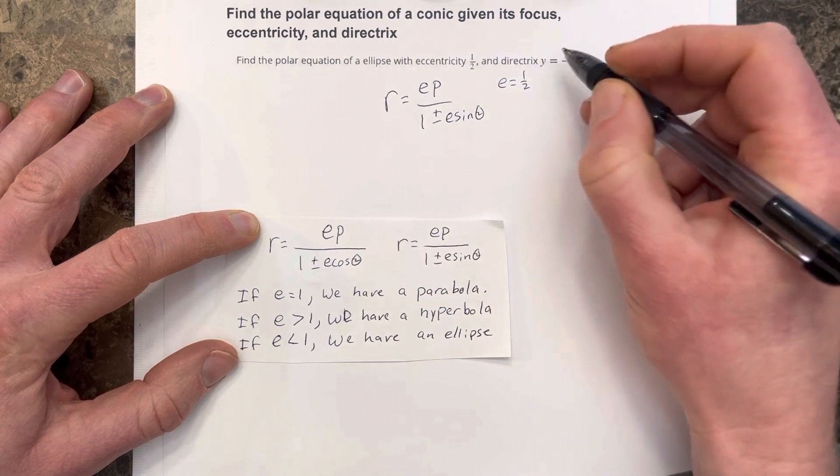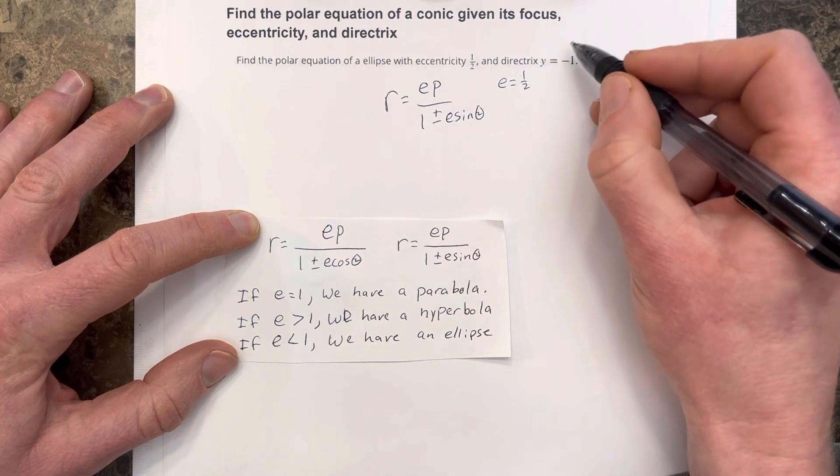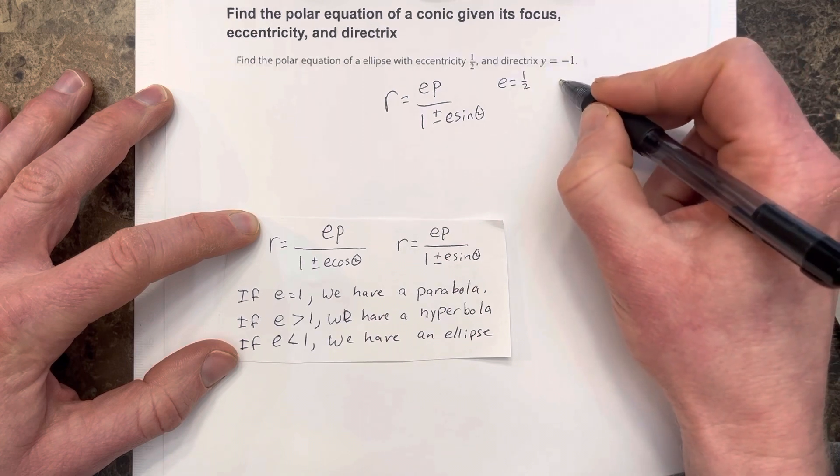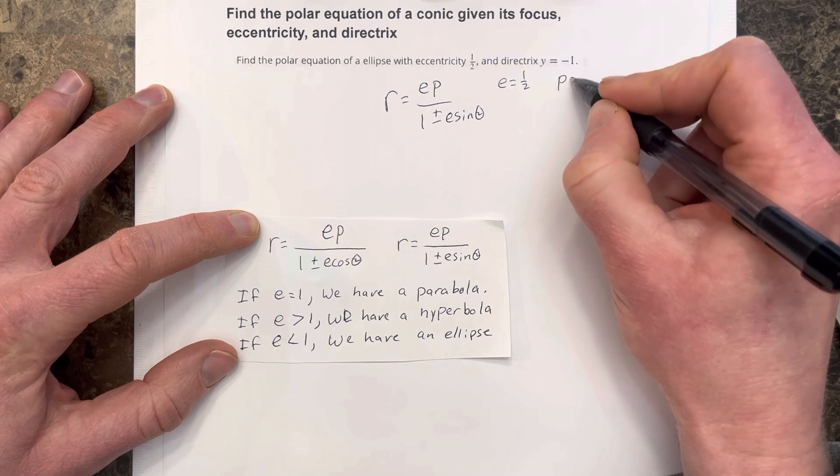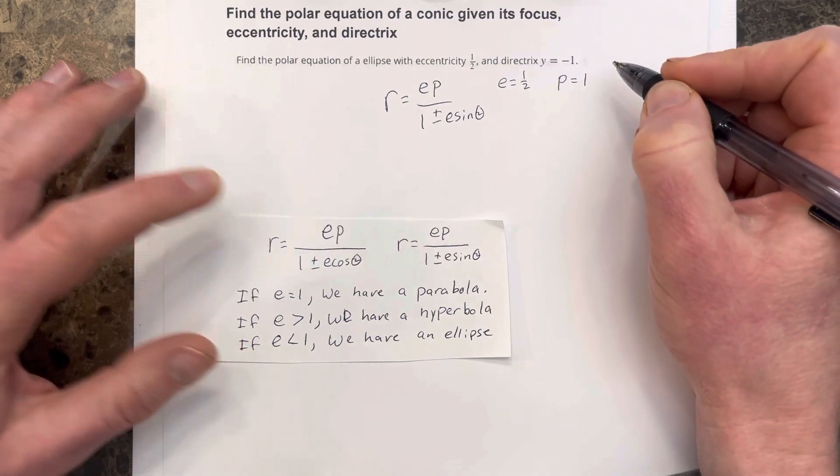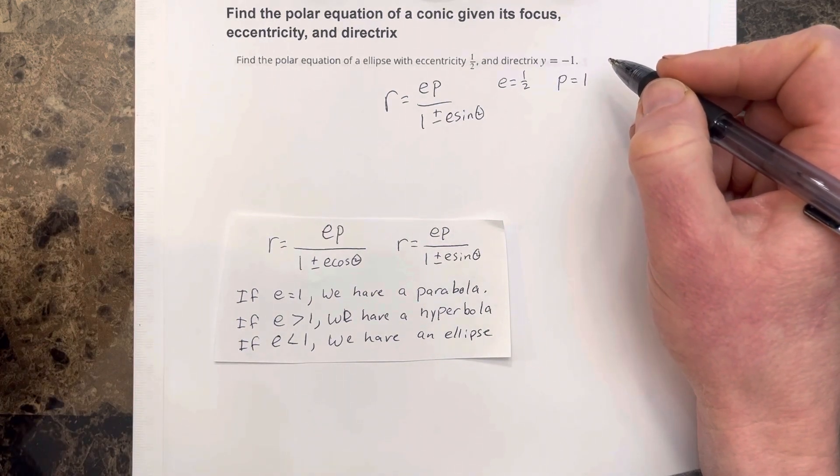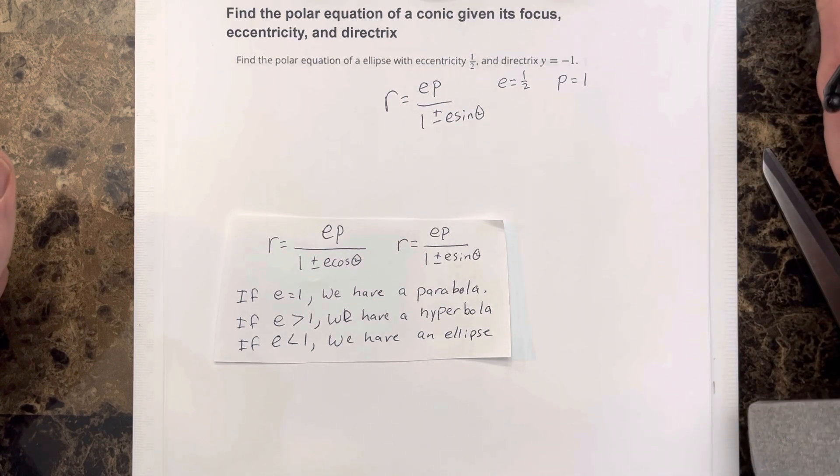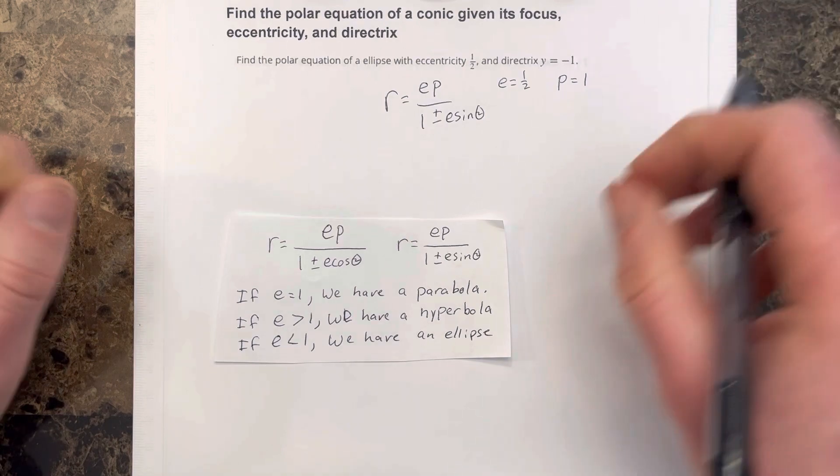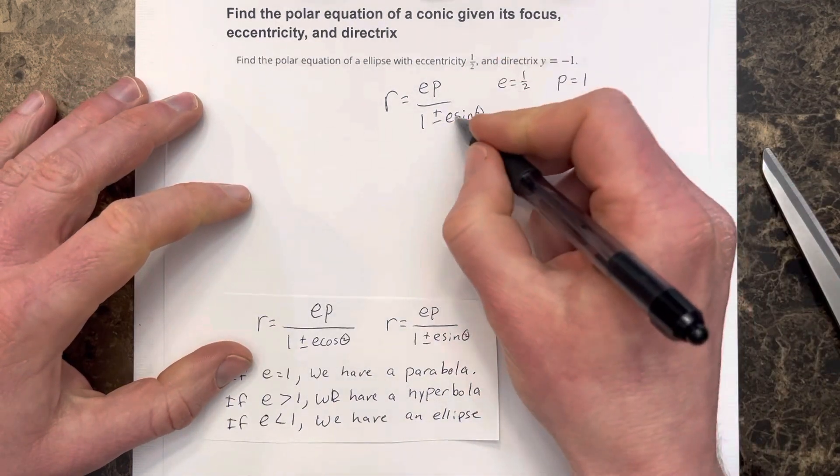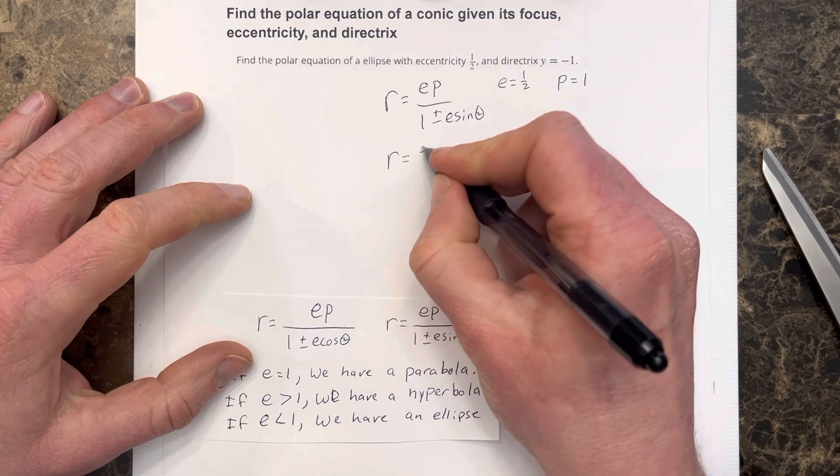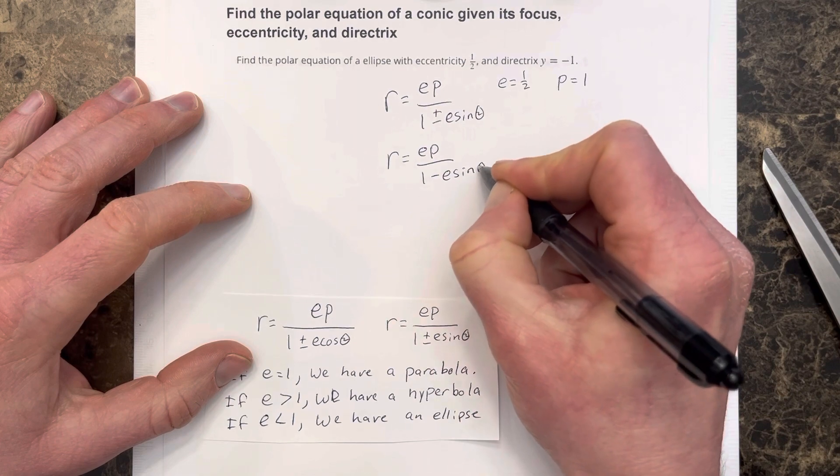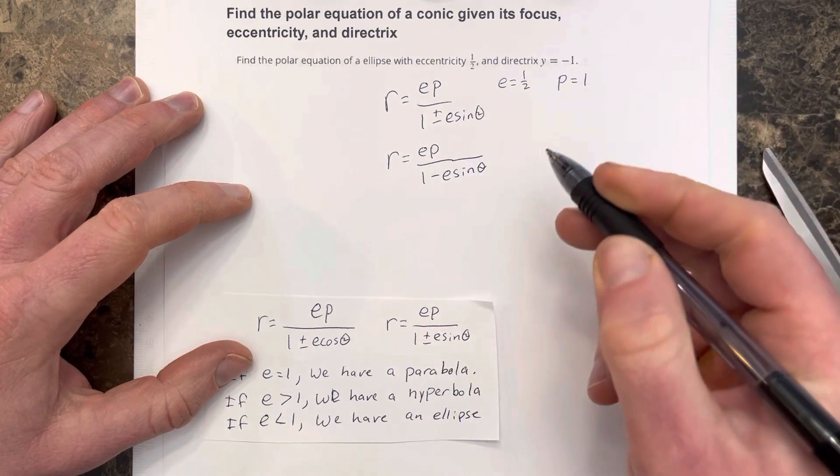We can find our p value using the directrix. The directrix is one below the pole, so p is equal to one. Because we have y equals negative one, we're going to use the subtraction version of this equation, so r equals ep divided by one minus e sine theta, because we're below the pole.